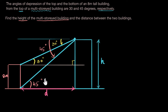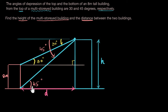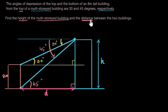Wait a minute — if the bottom is 45 degrees, I have to find two things: the height of the multi-storied building and the distance between the two. But this must mean that both are the same, because 45 degrees means the opposite side and adjacent side are equal. This is 45, this is 90, so this is also 45 — which means d and h are actually the same thing. So we're finding two things, but it's actually just one thing.